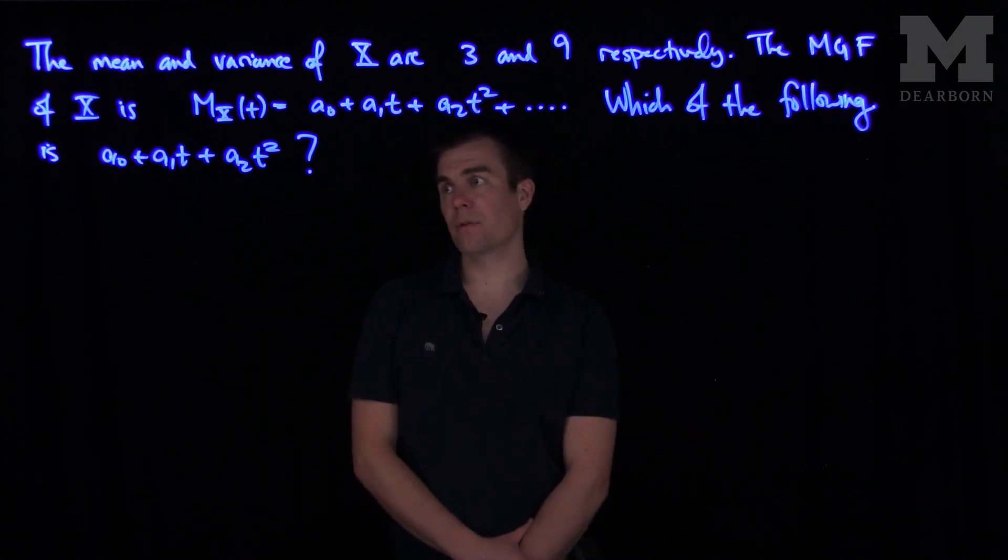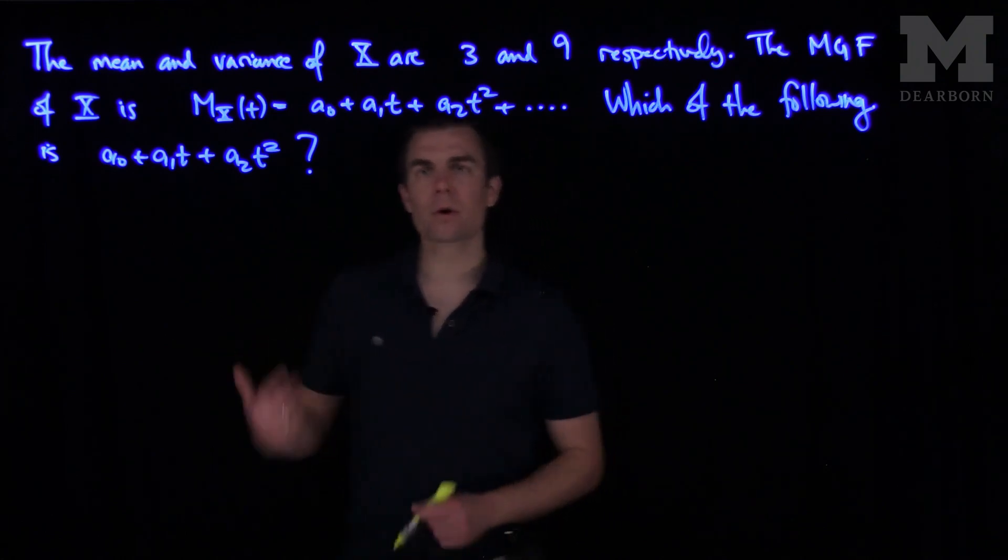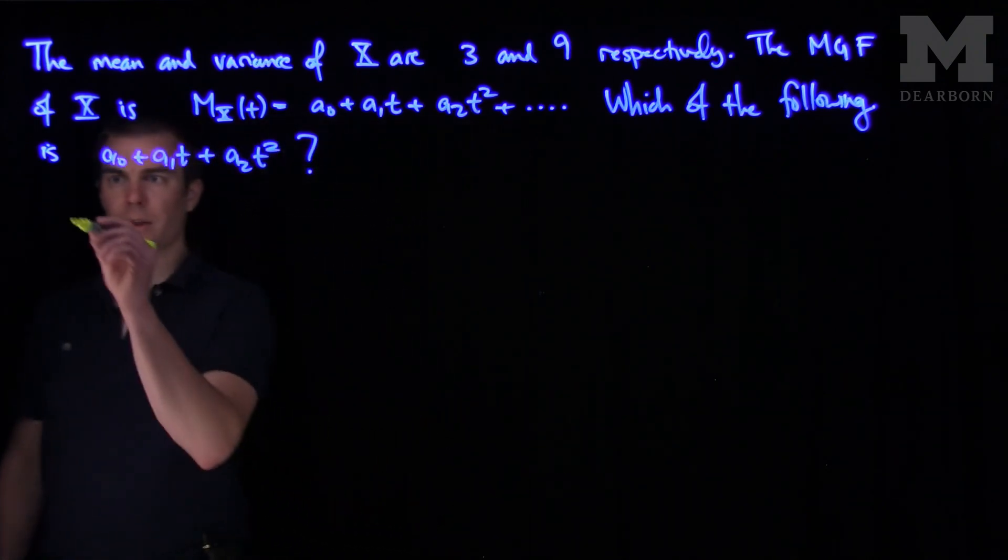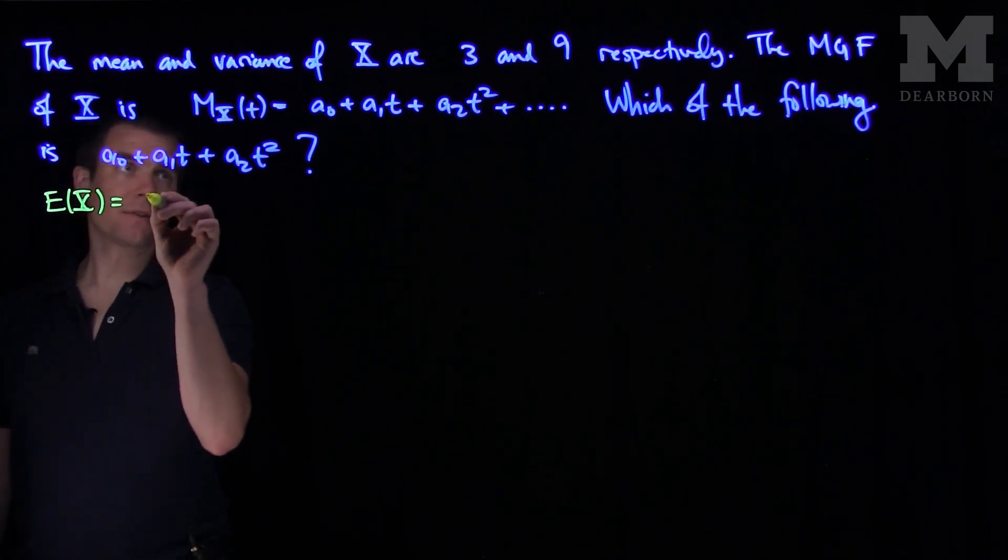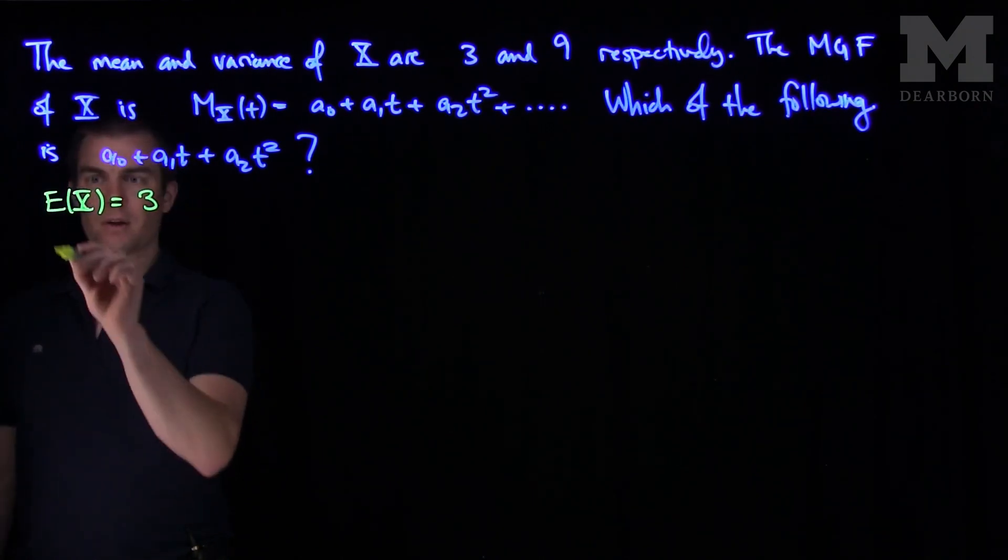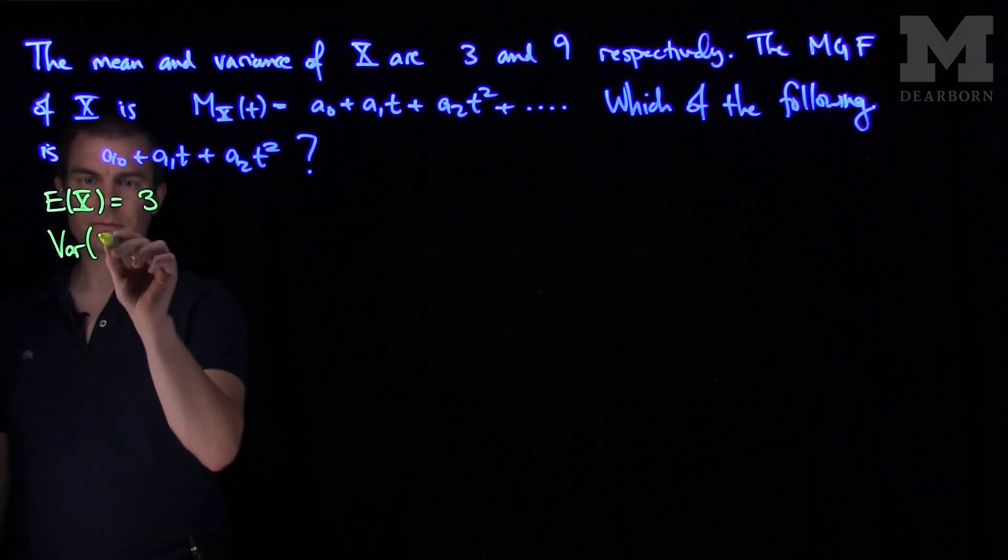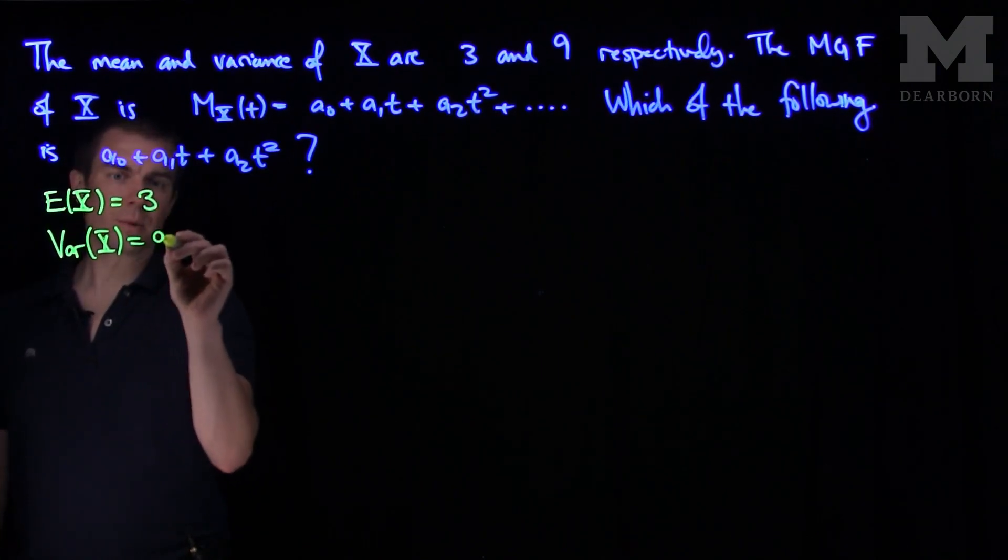We recall the definition so that the mean of X is the expected value of X. That's given to us as 3. The variance of X is equal to 9.